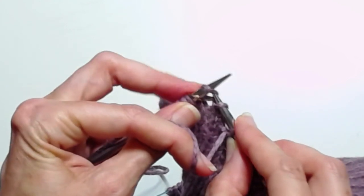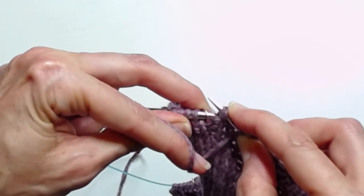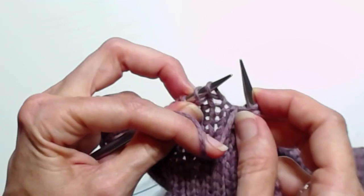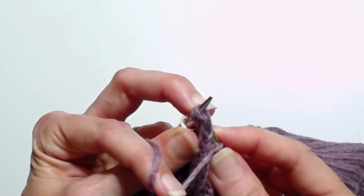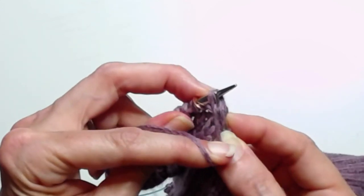Put them back where they came from and then I have to reach that needle around to the back and enter stitch number two and then stitch number one and purl them together.